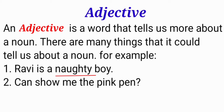In this sentence, Rabi is a boy — so the question arises: what kind of boy? Here the adjective tells us more about the noun. The word 'naughty' is used especially for Rabi. So, Rabi is a naughty boy.